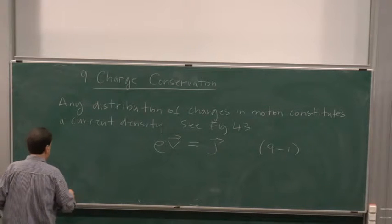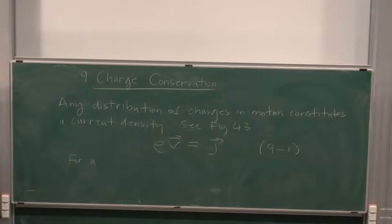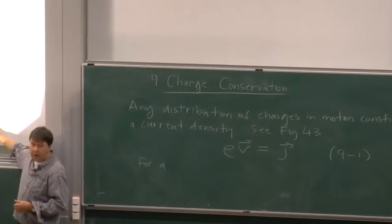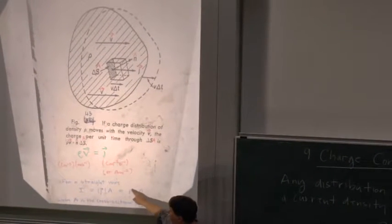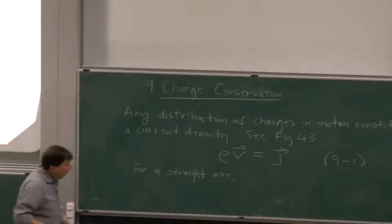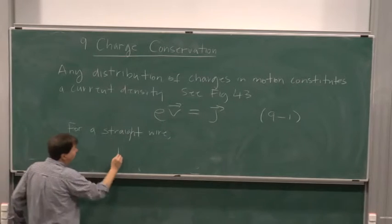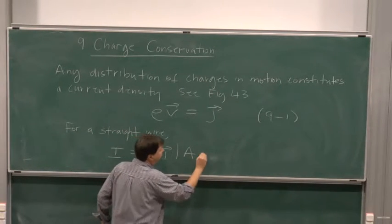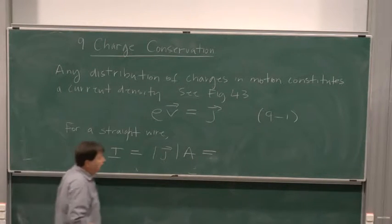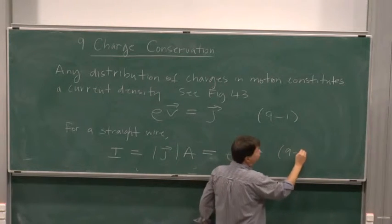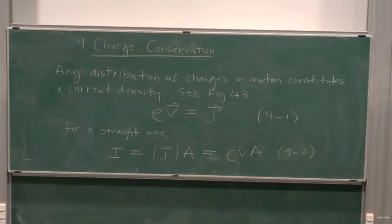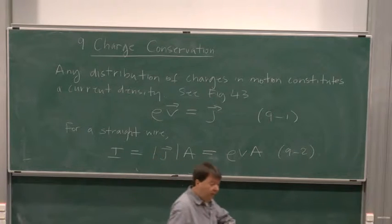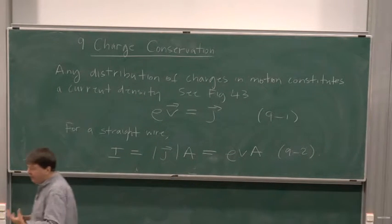For a straight wire, this way of writing will come back when we do the relativity of electric and magnetic fields in lecture 26. For a straight wire, we've got that I equals the magnitude of the current density times the area of the wire, which by this relationship is equal to ρvA. That's almost something we could knock off by dimensional analysis. It is very important to realise that any motion of charge - where the charge density changes as a function of time - gives a current density.